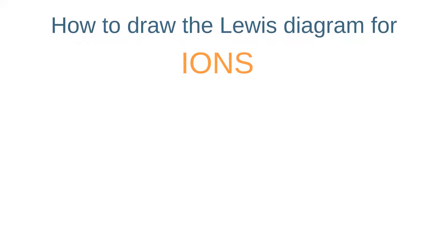In this video we're going to look at how you draw the Lewis diagrams for polyatomic ions. A polyatomic ion is an ion that has more than one type of atom in it. The process is very similar to how you draw Lewis diagrams for molecules that have more than four areas of electron density around them, and I'll link that video in the description below if you want to recap that first.